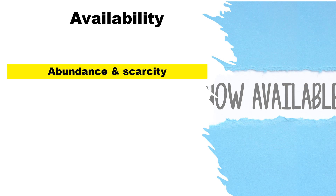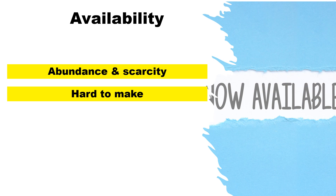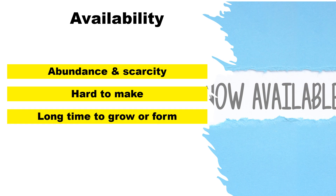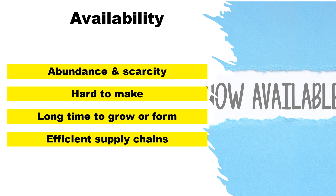Availability of a material will be determined by the abundance and scarcity of the material. The economy, the difficulty in processing a material or making a component, the length of time required for the material to grow, form, and then be processed, and the efficiency of the supply chain will also affect availability.